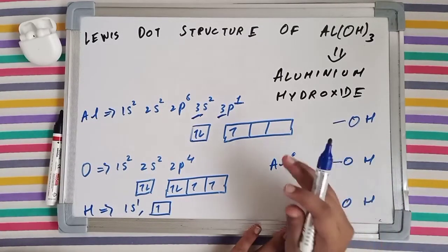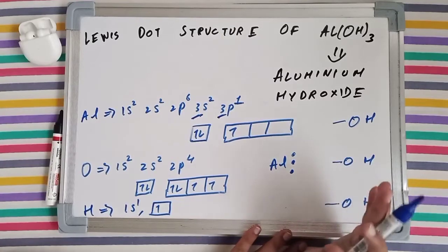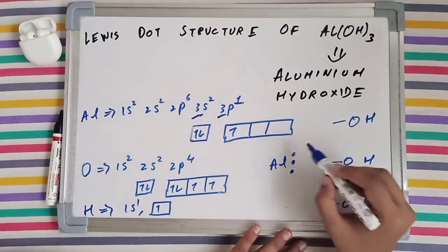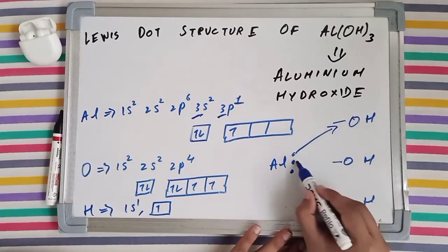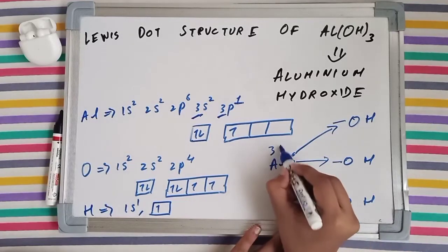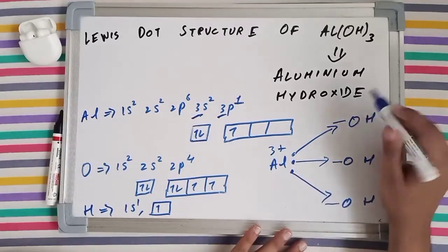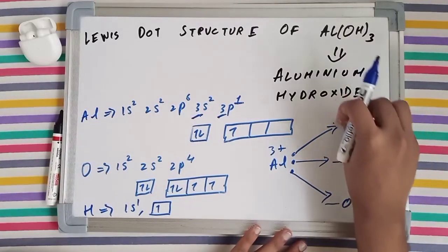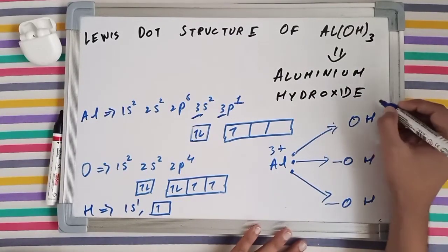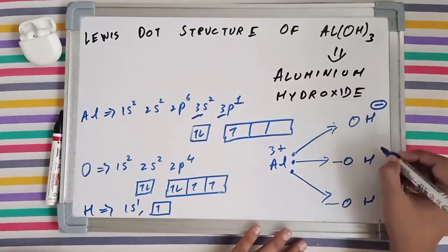Aluminum, being a metal, is very good in donating electrons. So it donates single electrons to each of the OH, and gains a 3 plus charge. Whereas OH will now stop making bonds because it has gained an extra electron and oxygen has completed its octet. So OH will gain a negative charge.